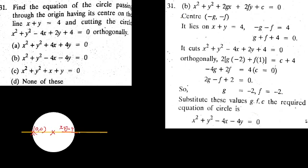The center lies on the yellow color line x plus y equal to 4. The condition for orthogonal circles is: 2g1g2 plus 2f1f2 is equal to c1 plus c2. Cuts are orthogonal means cuts are perpendicular. This is the condition.